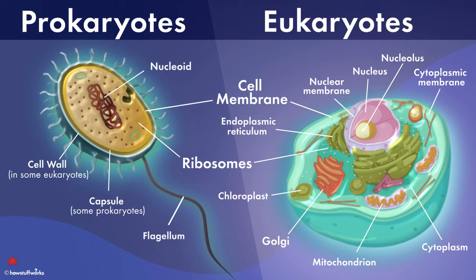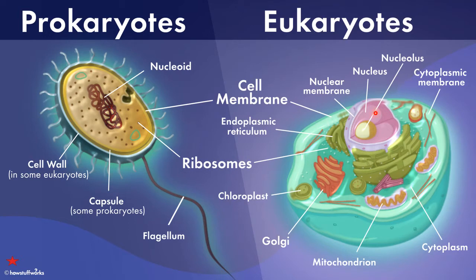Here are some points I will discuss today. This diagram is quite comprehensive — you can see a prokaryotic cell on one side and a eukaryotic cell on the other. In prokaryotes, there is a nucleoid, meaning the nuclear material is not bound to any membrane; it is free-flowing in the cytoplasm. In eukaryotes, you can find a nuclear membrane which covers the nucleus.